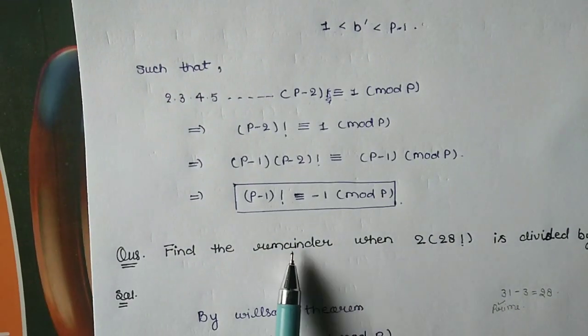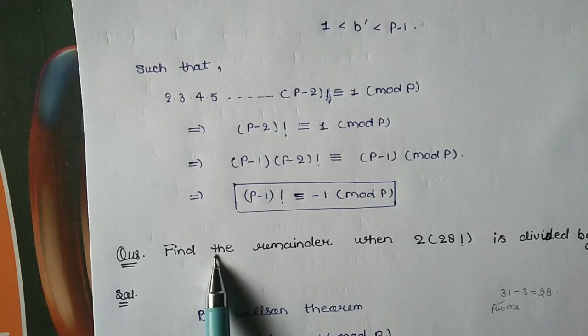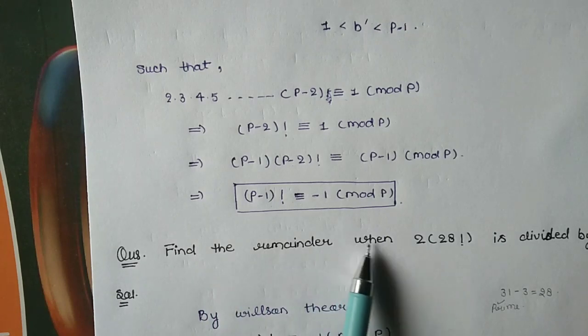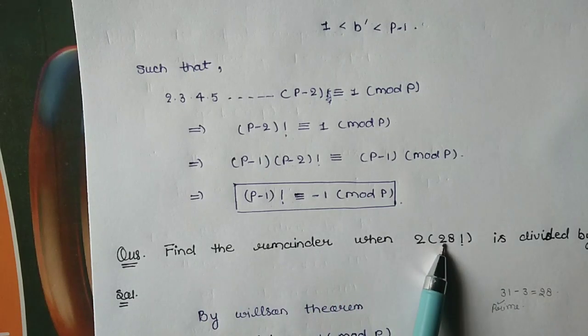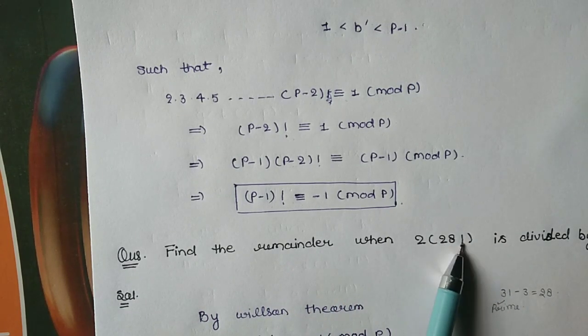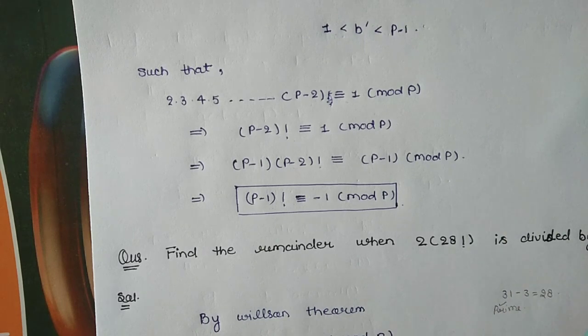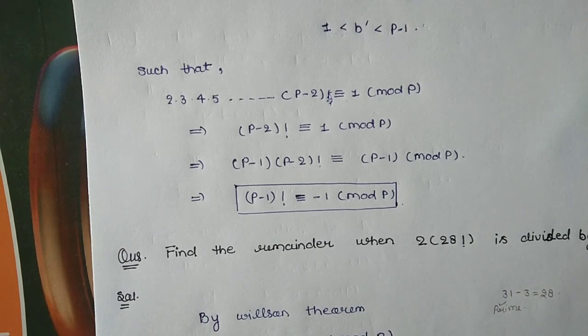Now let's talk about basic numerical problems. The question is: find the remainder when 2 × 28! is divided by 31.